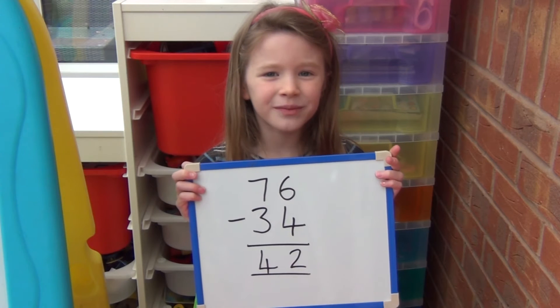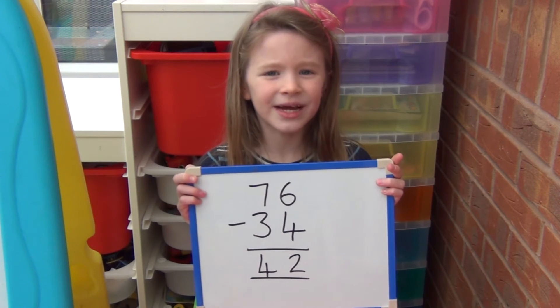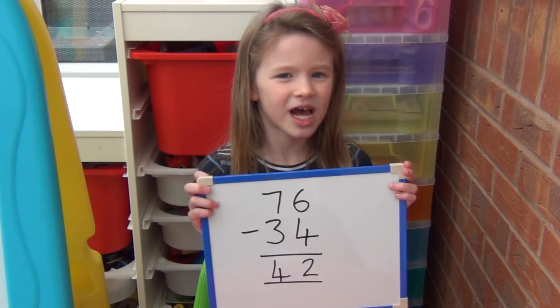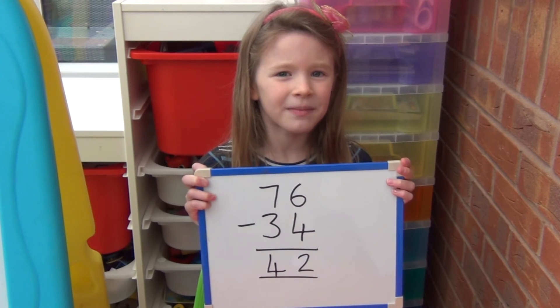We can show this on a whiteboard without the straws. This is showing 76 take away 34 written as column method.